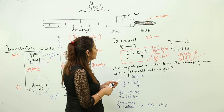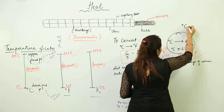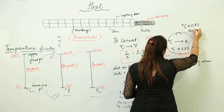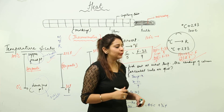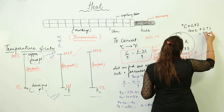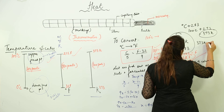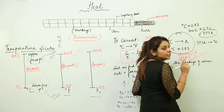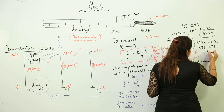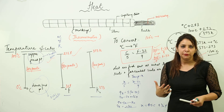To convert degree Celsius into Kelvin, simply add 273. For example, 100 degree Celsius becomes 373 Kelvin. Conversely, to convert Kelvin into degree Celsius, subtract 273 — so 373 Kelvin becomes 100 degree Celsius. This means temperatures are actually interconvertible between scales.